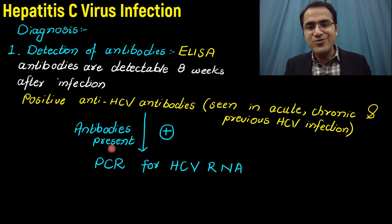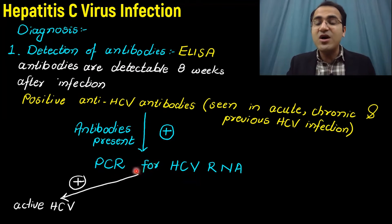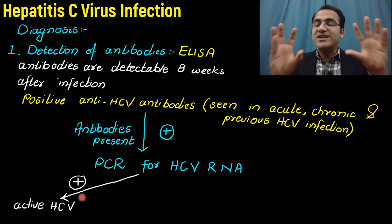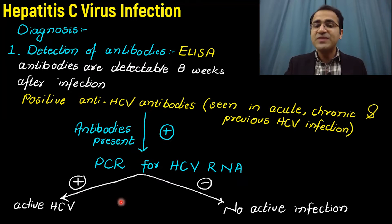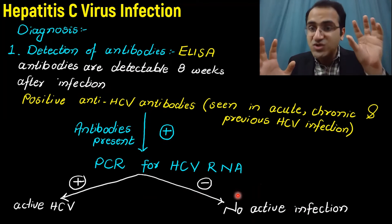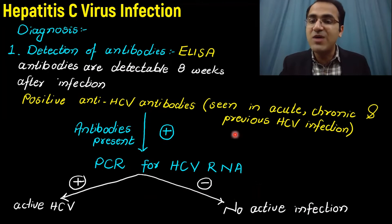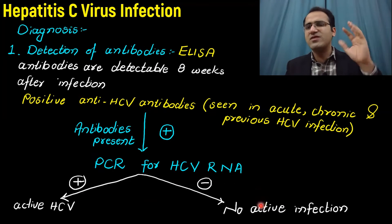If ELISA for hepatitis C is positive, the next step is PCR for HCV RNA — you detect RNA in the blood to see how many copies are present. If PCR for HCV RNA is positive, it means there is an active infection; the virus is replicating in blood. If HCV RNA is negative, there is no active infection — the virus has been cleared by antibodies, indicating a previous resolved HCV infection.